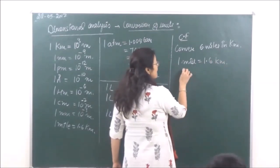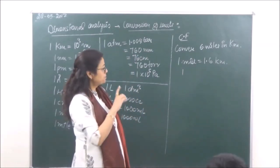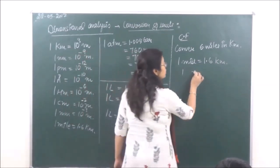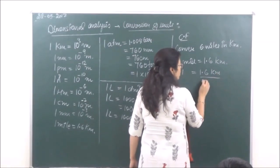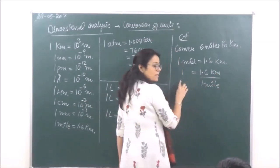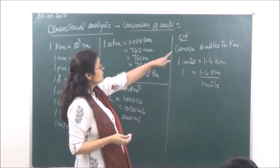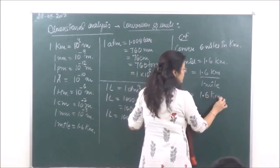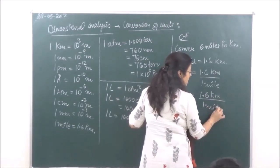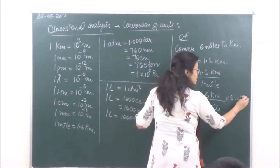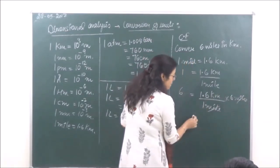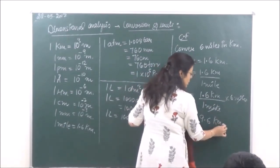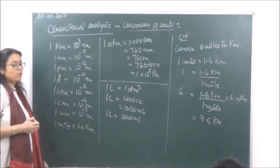We know that 1 mile is equal to 1.6 kilometers. By unitary method: if 1 mile equals 1.6 kilometers, then 1 equals 1.6 kilometers upon 1 mile. Therefore 6 miles will be equal to 1.6 kilometers upon 1 mile, into 6 miles. Miles cancel out, giving 9.6 kilometers. So 6 miles equals 9.6 kilometers.